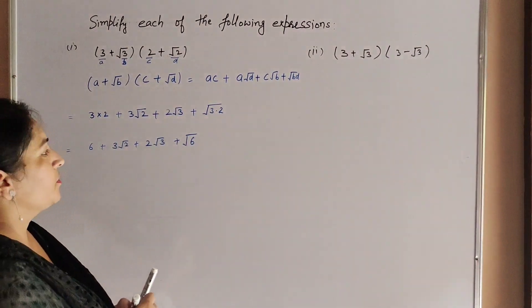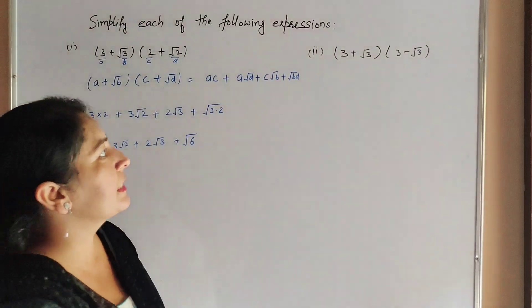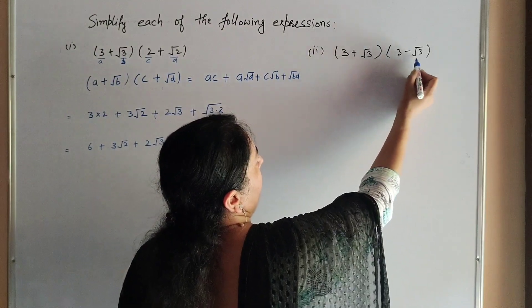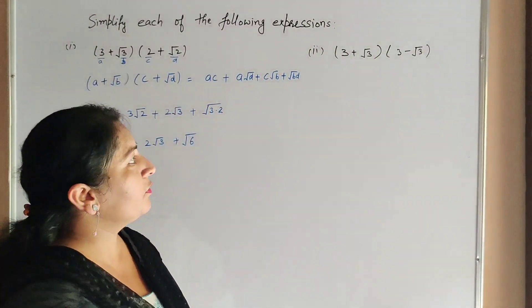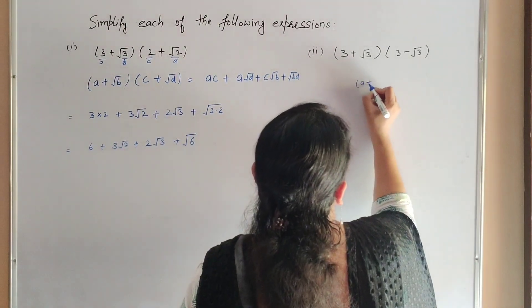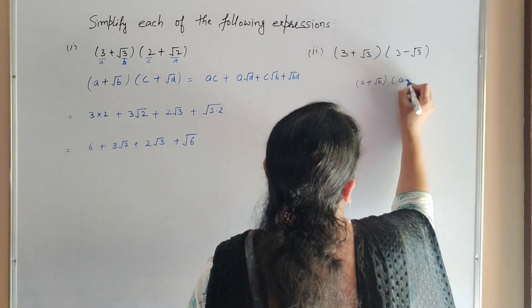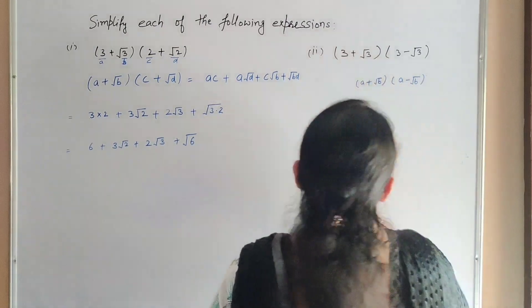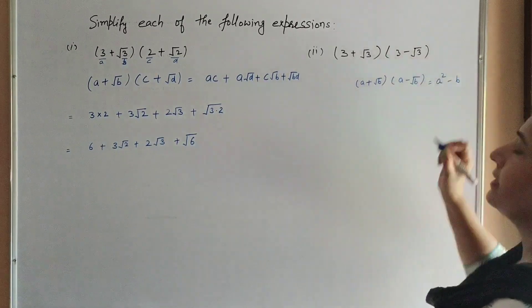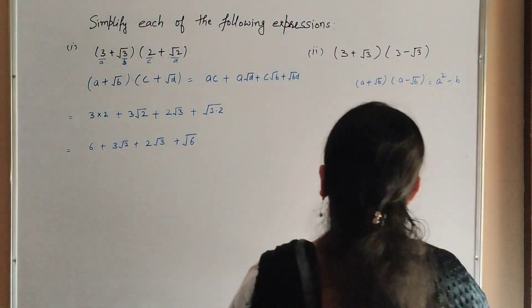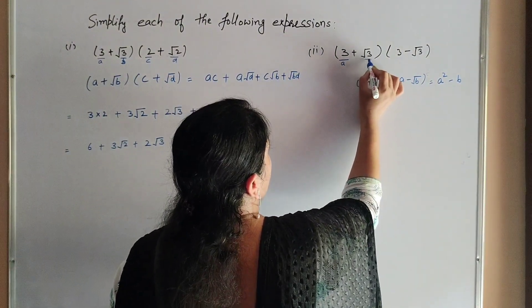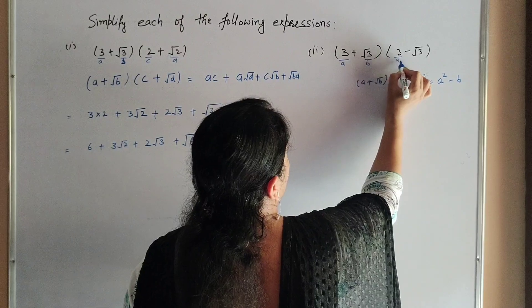Now we move to the second part: (3 + √3) into (3 − √3). To simplify this we use the identity (a + √b)(a − √b) = a² − b, where a = 3 and b = 3.